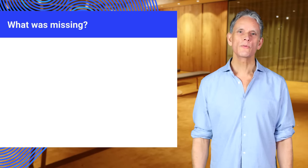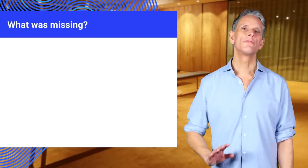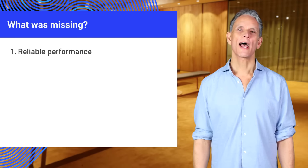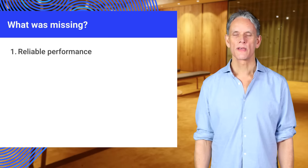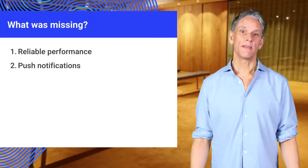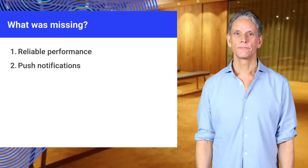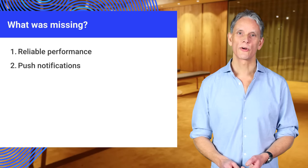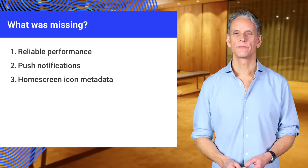So what was missing from the web? First, we needed reliability and performance on par with native apps. Next, we needed to be in the notification tray. Lastly, once trustworthy, we needed to be on the home screen.